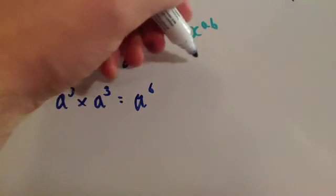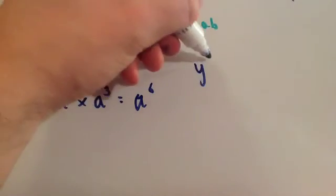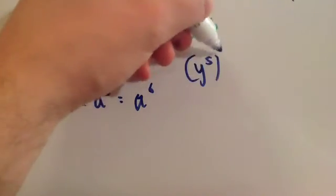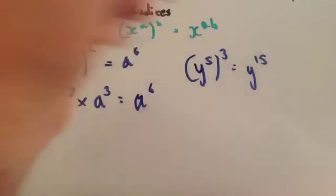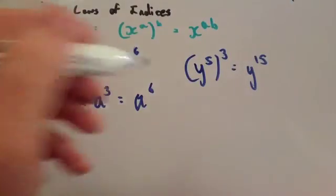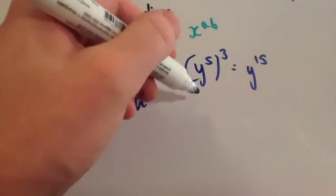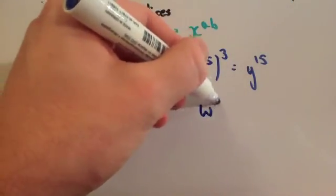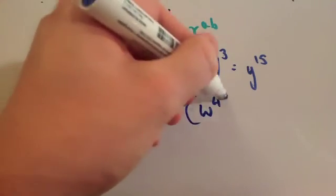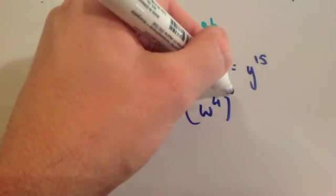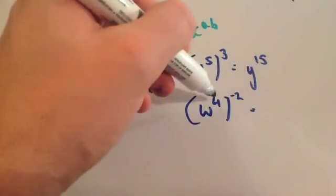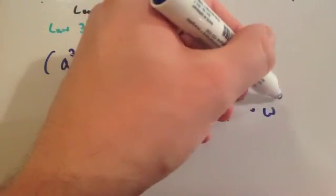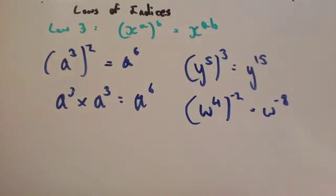Let's look at another example. If you had y to the power of 5, and that to the power of 3, then you times the powers, and you're going to get y to the power of 15. If you had something like w to the power of 4, and all of that to the power of minus 2, again, you times the powers: 4 times minus 2 would be minus 8. So it would be w to the minus 8.